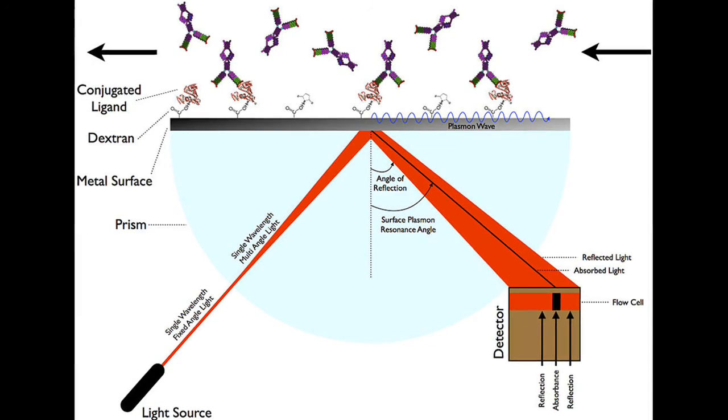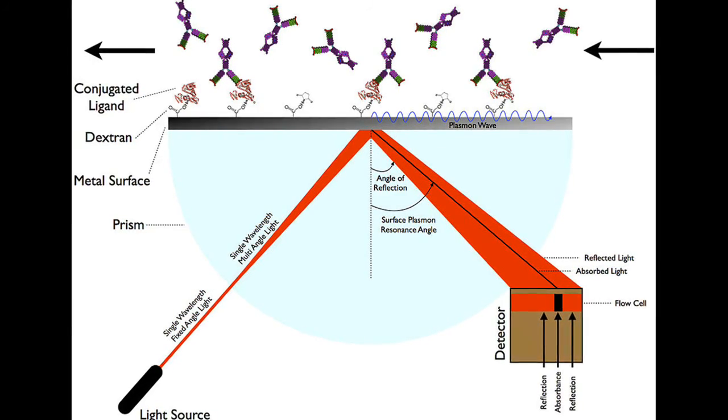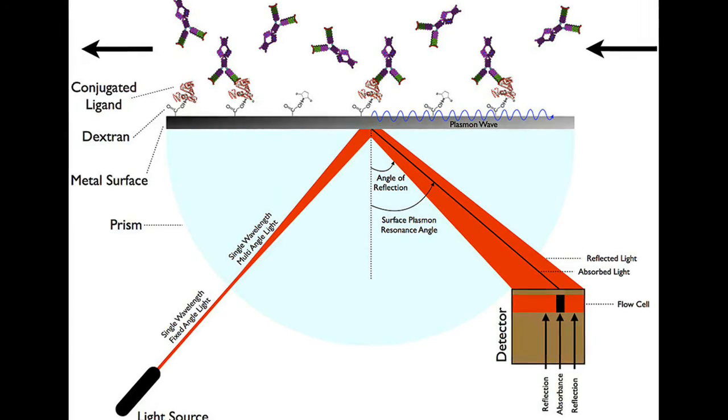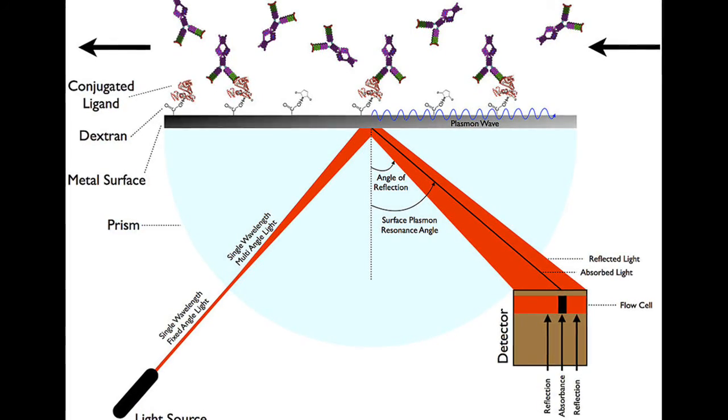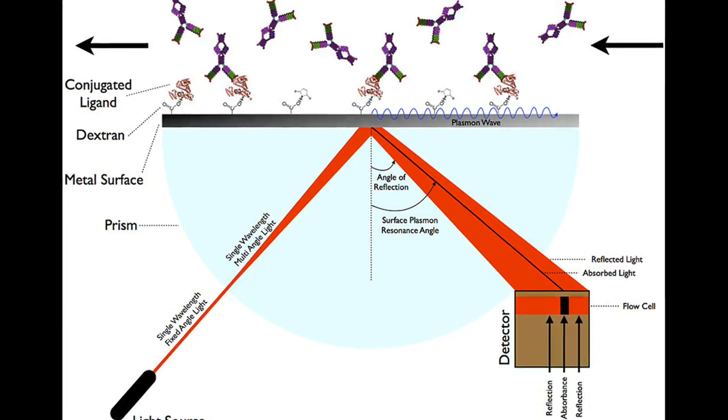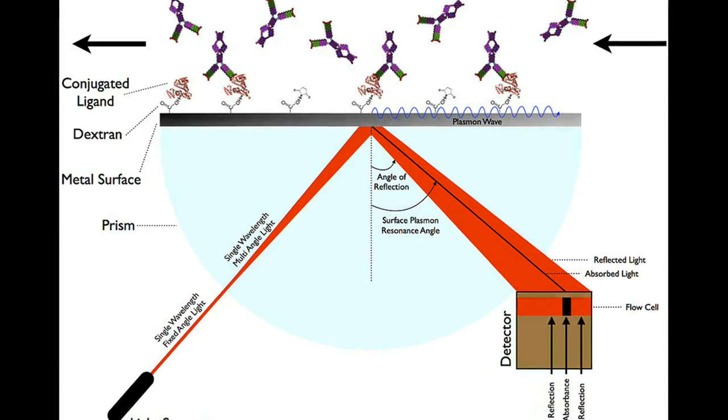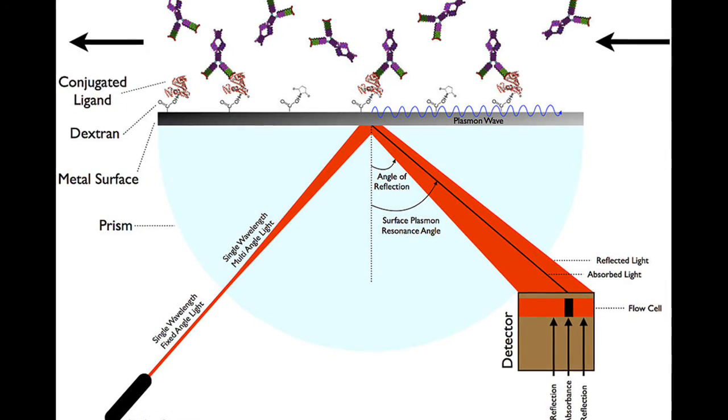Surface plasmon resonance occurs when a fixed beam of light strikes a metallic film. Most of the light is reflected, but a small band is absorbed by the film's surface electrons, causing them to resonate.